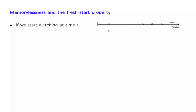The first property is the following. The process starts at time 0. So you come in and start watching at, let's say, time 7. Or more generally, instead of time 7, suppose that you come in and start watching at some time little t. The important thing here is that little t is a constant — it's a deterministic number.